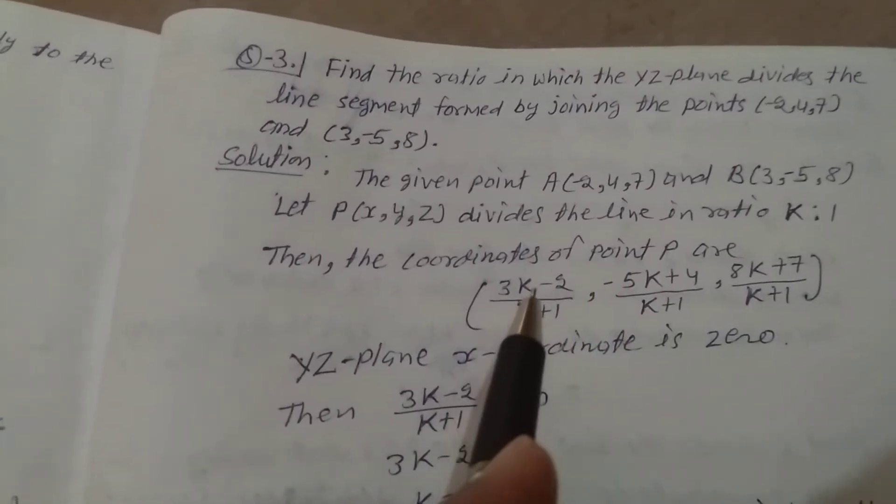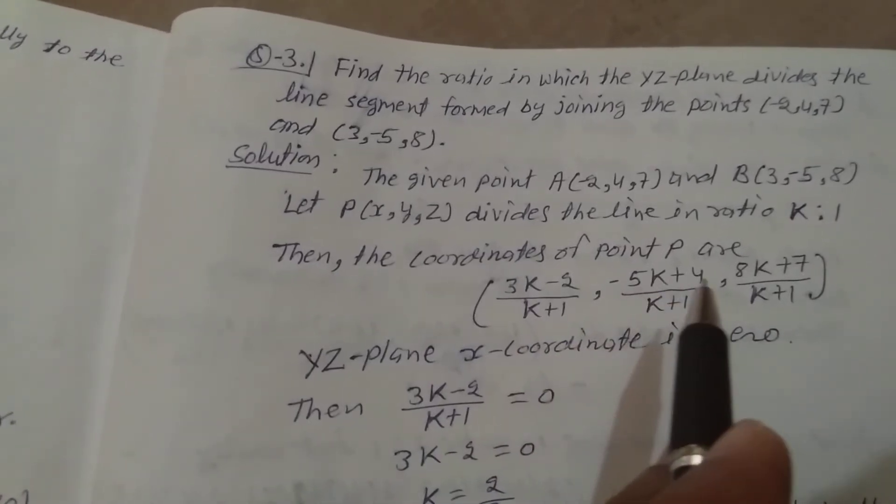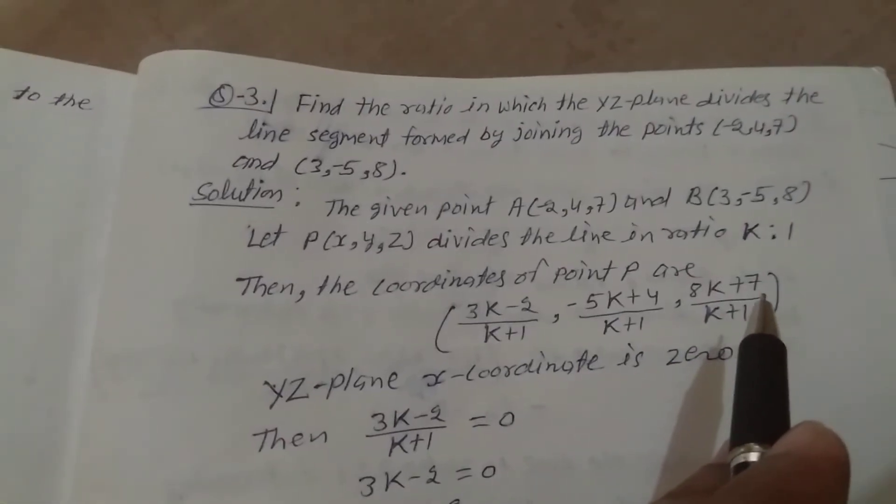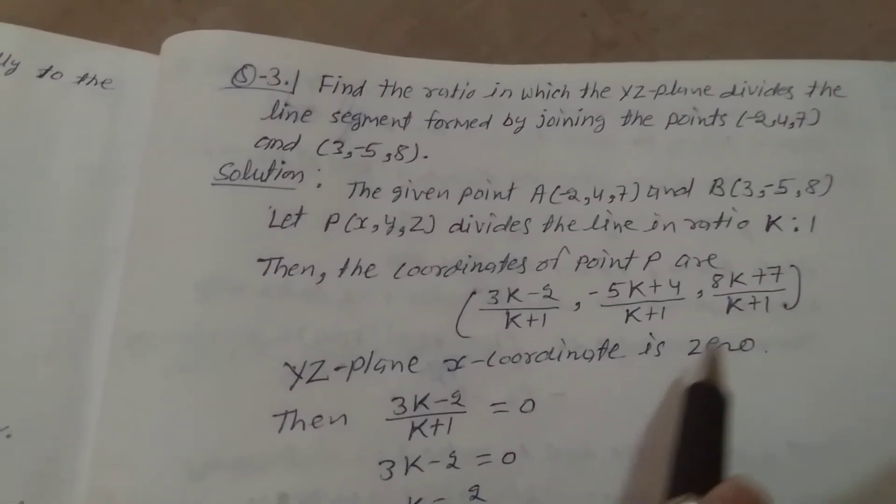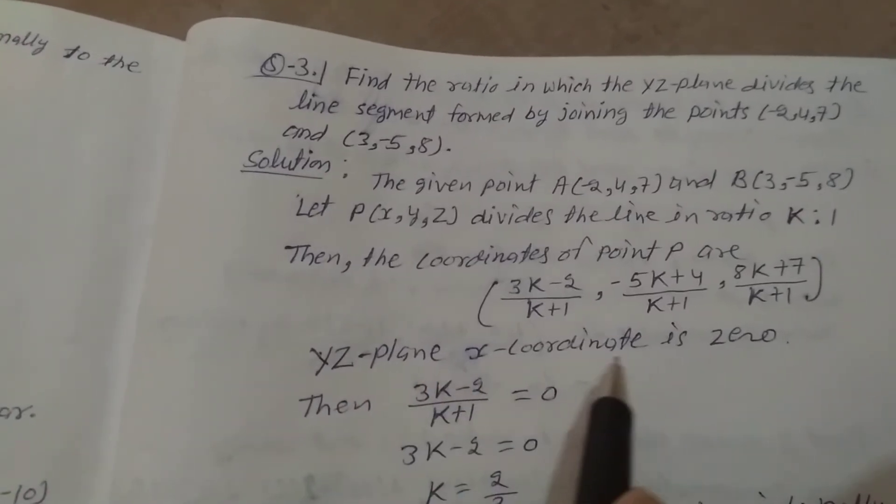(3K-2)/(K+1), (5K+4)/(K+1), (8K+7)/(K+1). Since the YZ plane has x-coordinate equal to 0,